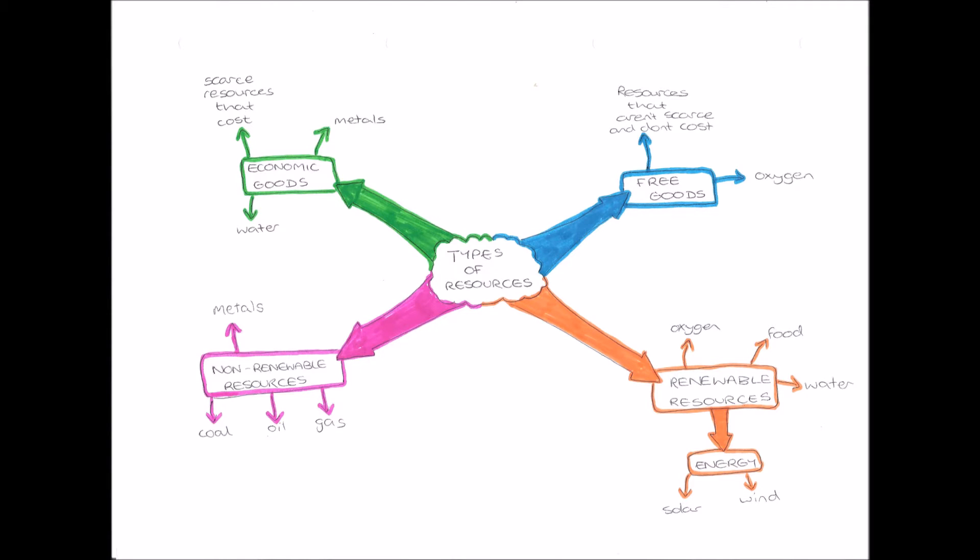Hello everybody and welcome to this microeconomic video on types of resources. The first thing you need to know is the difference between economic goods and free goods. Economic goods in the top left. An economic good is a scarce resource that costs.